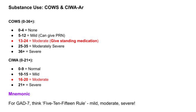CIWA scores range from 0 to 21+: 0 to 9 is normal, 10 to 15 is mild, 16 to 20 is moderate, and 21 and above is severe.